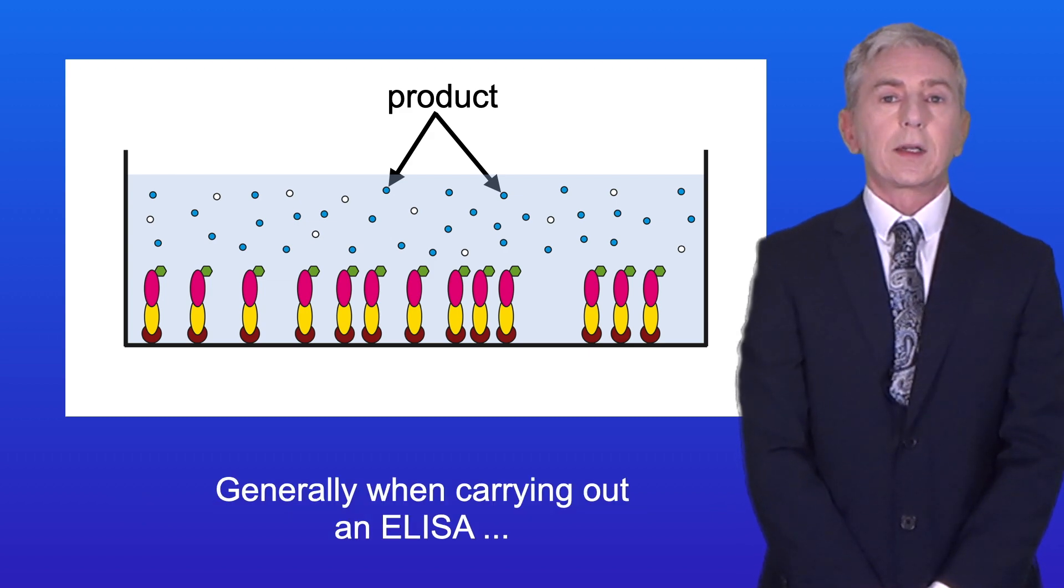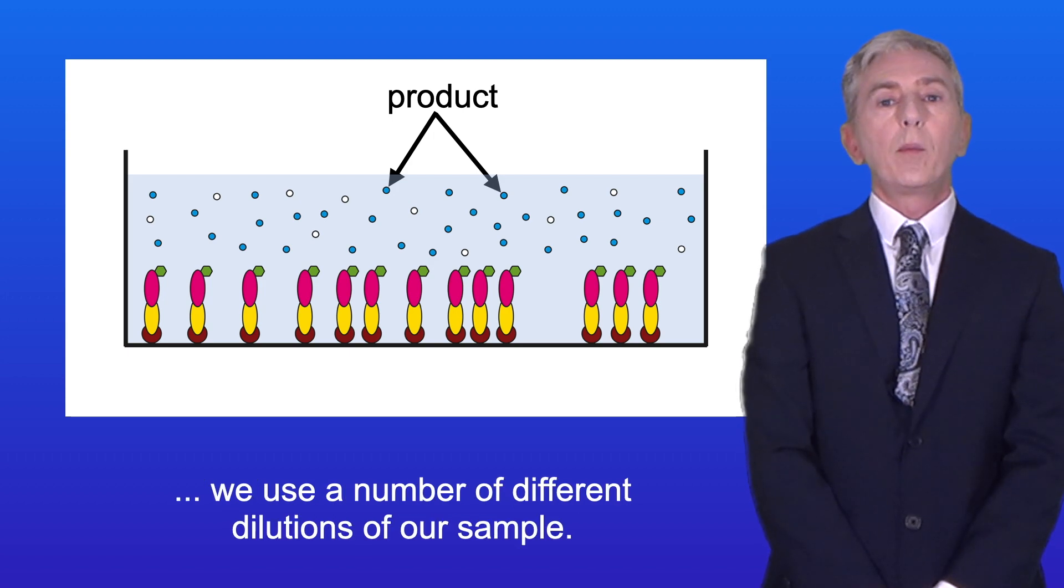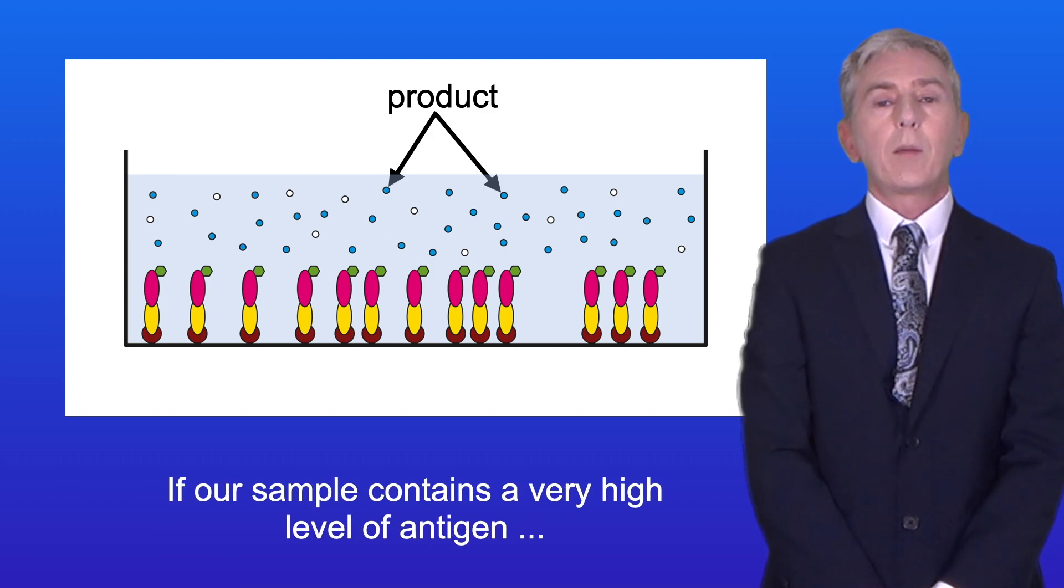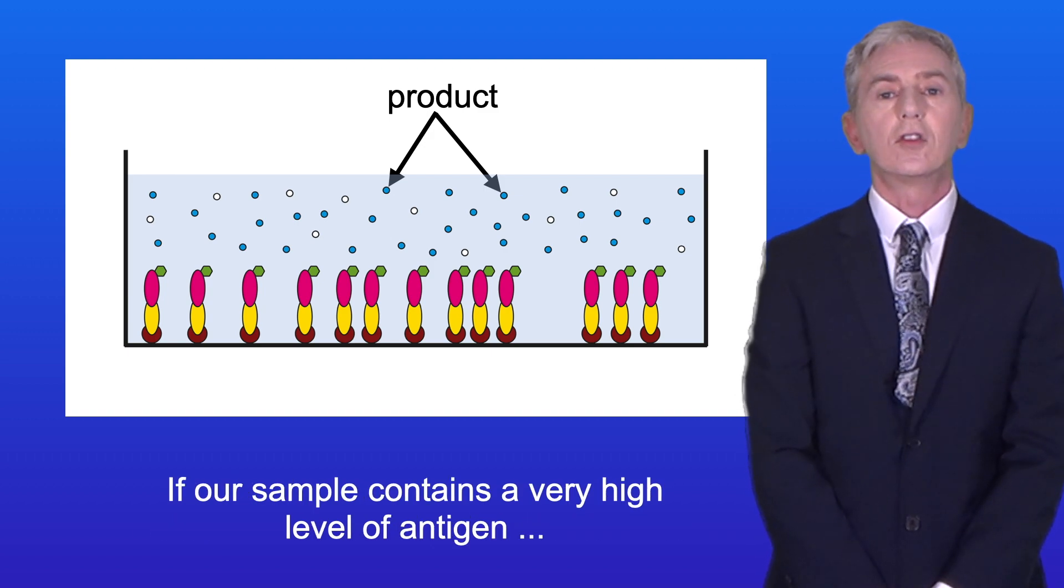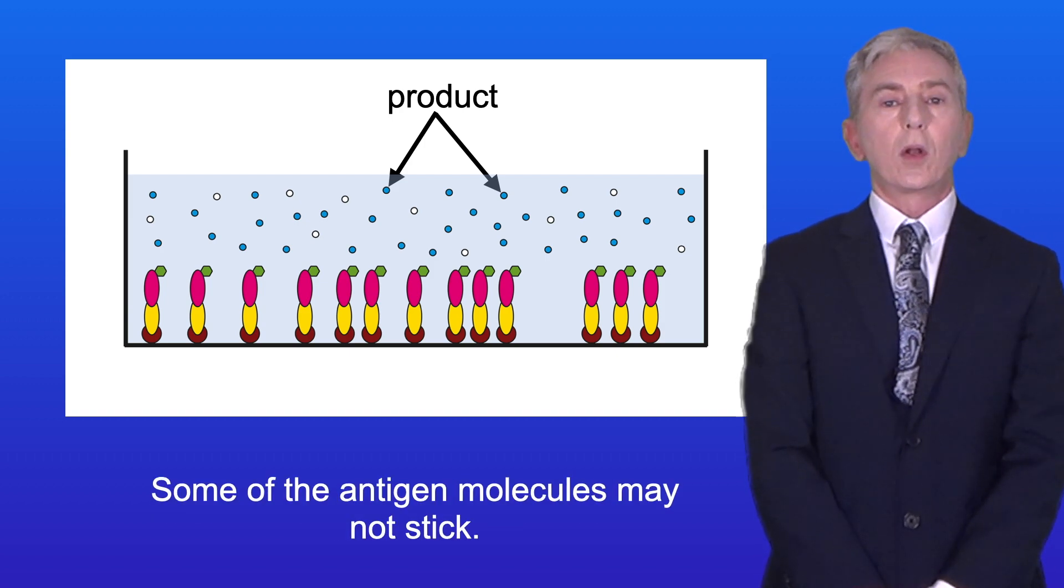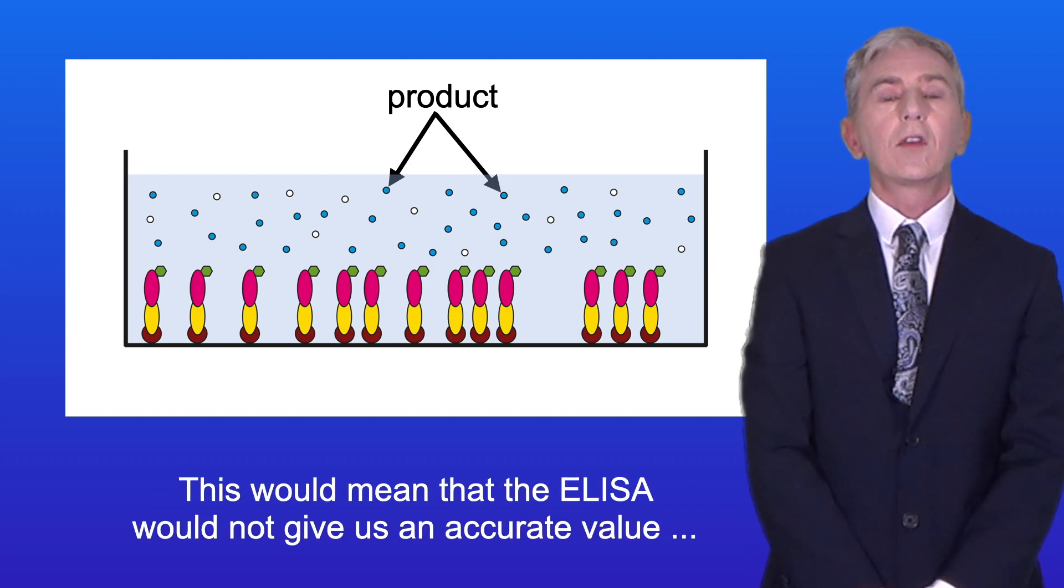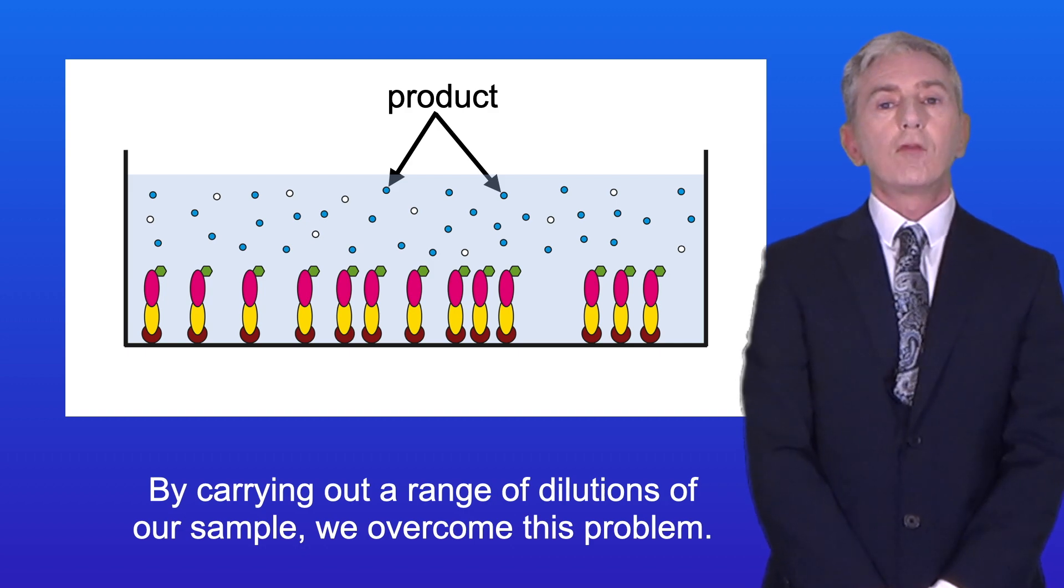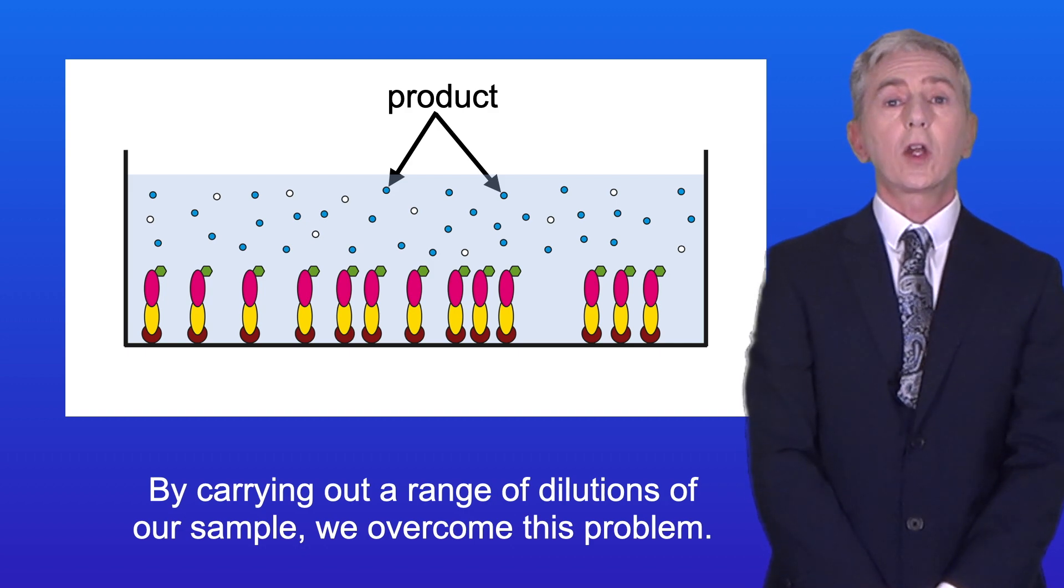Now generally, when carrying out an ELISA, we use a number of different dilutions of our sample. This is because we want all of our antigen molecules to stick to the plate. If our sample contains a very high level of antigen, then the well may be overloaded, and some of the antigen molecules may not stick. This would mean that the ELISA would not give us an accurate value for the quantity of antigen. By carrying out a range of dilutions of our sample, we overcome this problem.